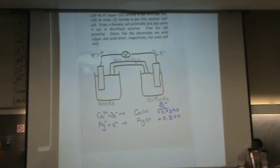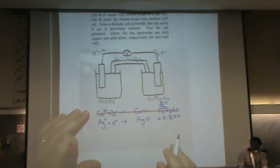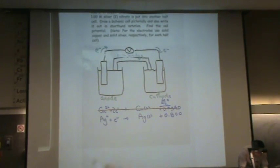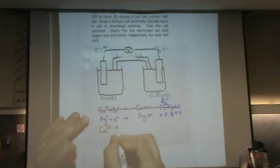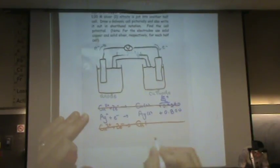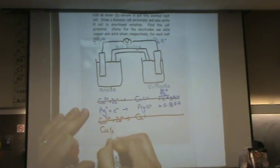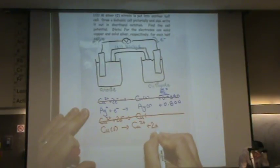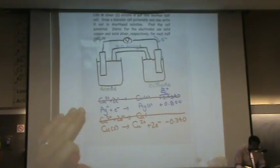So what I'm going to do, cross this out and I'm going to rewrite it. Copper solid goes to copper two plus, plus two electrons, and now that's negative 0.34. So all I did is flip that.